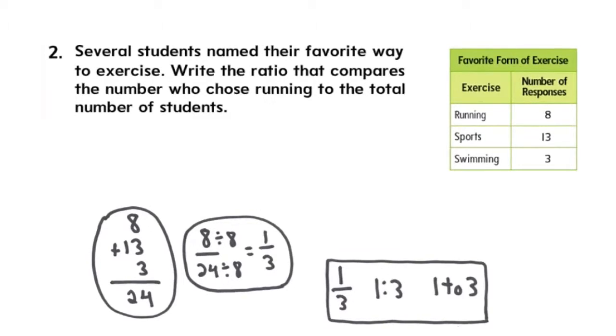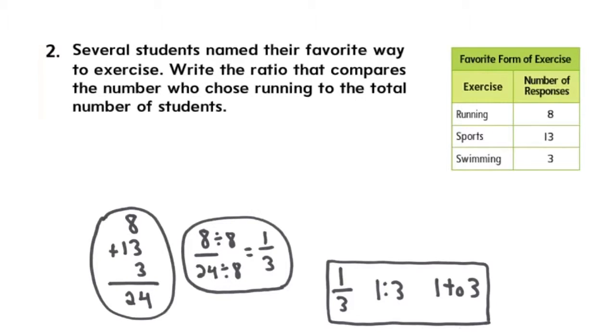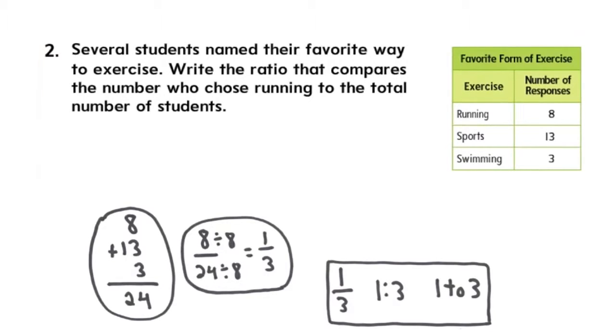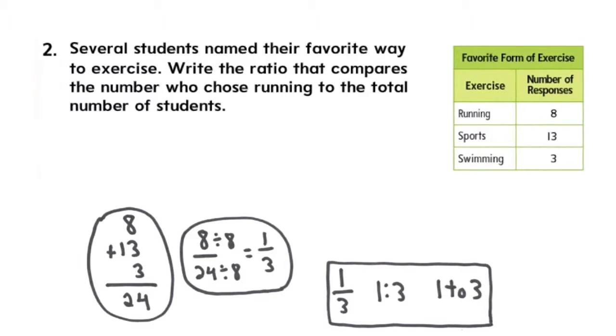Now you have to check how many people chose running, which was 8. That is your numerator, because that's what they asked for first. The denominator would be your total, which we got 24.